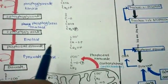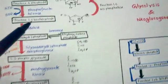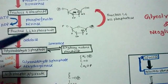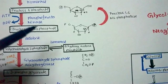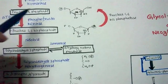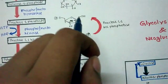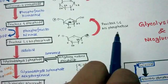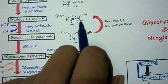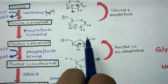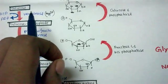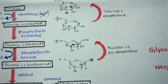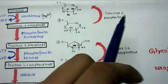From phosphoenolpyruvate, the subsequent steps are reversible and can proceed up to fructose-1,6-bisphosphate. However, it cannot be directly converted to fructose-6-phosphate because the step catalyzed by phosphofructokinase is not reversible. Therefore, a bypass is performed by fructose-1,6-bisphosphatase, a phosphatase enzyme that removes the phosphate from fructose-1,6-bisphosphate to convert it into fructose-6-phosphate. Similarly, the step from glucose-6-phosphate to glucose is not reversible, so glucose-6-phosphatase cleaves the phosphate to yield glucose.